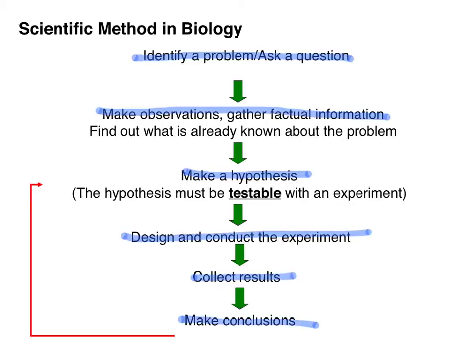But the scientific method does not stop there. I want you to note that arrow right there. This arrow shows us that even at the end of an experiment, even after results are collected and conclusions are made, scientists must go back and look at their hypothesis and ask themselves a very simple question: does the data that was collected during the experiment support the hypothesis?